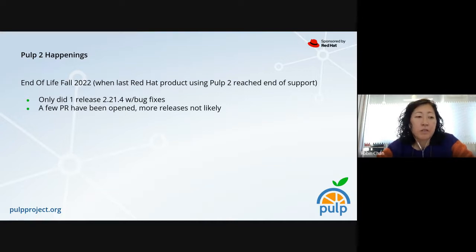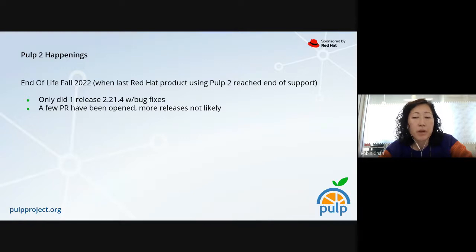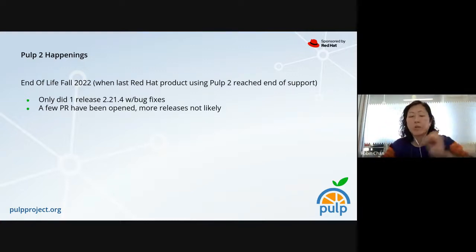For full transparency, that is when the last Red Hat product using PULP 2 reaches end of life. We did have one release — I think it was at the tail end of 2020 after PULPCon, 2.21.4, with bug fixes. There have been some pull requests opened, but it's very unlikely that we will do any more releases. Those pull requests are out there for people to patch their systems, knowing that there are some folks still on PULP 2 making their plans.